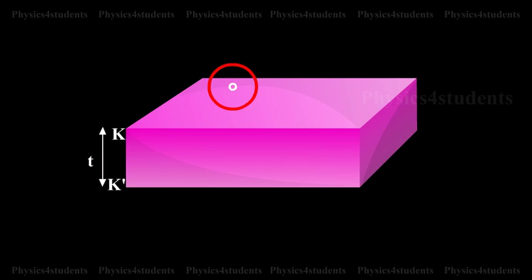Consider a transparent thin film of uniform thickness T and its refractive index mu bounded by two plane surfaces K and K'.